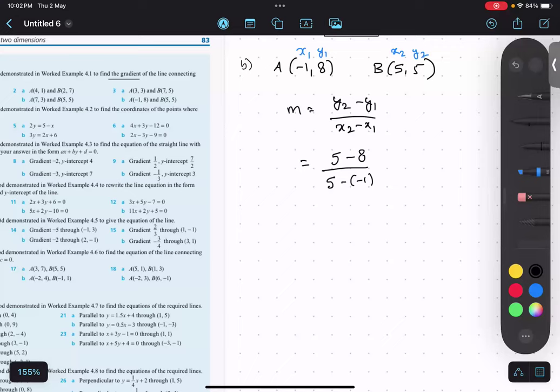Okay. So 5 minus 8 is negative 3. And over here, 5 plus 1. So minus 3 upon 6. Minus half is the slope. Is there answer matching?